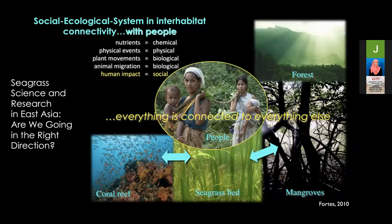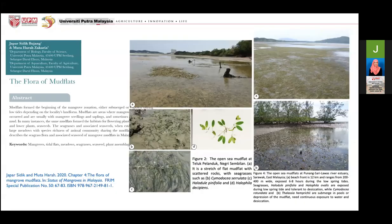Seagrass science and research in East Asia shows social-ecological systems interconnecting between forest, mangroves, seagrass, flats, and coral reefs. This has been studied since 2010 looking at chemical, physical, biological, and human/social impacts on seagrass. Seagrass is not only related to marine environments but also to mudflats, and in the mudflat area there are many types of fauna. Because of the seagrass, the diversity of associated animals is higher in that particular area.